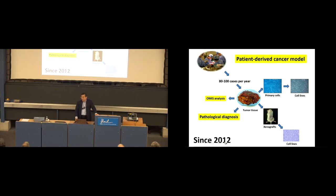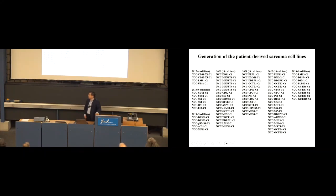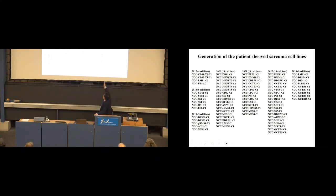With this idea, I started establishing cell lines of rare cancers in 2012. Before that, I had asked other researchers to give me cell lines — I sent emails repeatedly and got no response. So I decided to make cell lines myself. Since then, almost every week I receive tumor tissue samples from hospitals and try to establish cell lines or xenografts, while also conducting proteomics or genomic studies for the established cancer models. At the beginning we couldn't establish cell lines at all — I had no experience with primary tissue culture. But we improved our conditions, hired good people, and recently we can establish many cell lines annually.